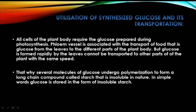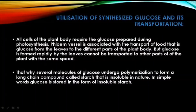Regarding utilization of synthesized glucose and its transport: some glucose is utilized by the plant body for cellular respiration, for which oxygen — also produced during photosynthesis — is required. All cells of the plant body require the glucose prepared during photosynthesis. Phloem is associated with transporting food, that is glucose, from the leaves to different parts of the plant body.